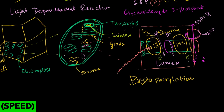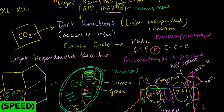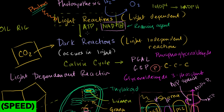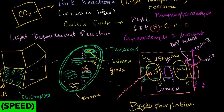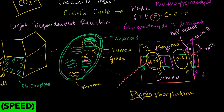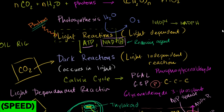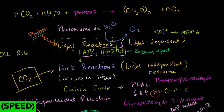The hydrogen protons want to go back — chemiosmosis — they go back into the stroma, and that drives ATP synthase. The light reactions produce ATP and also NADPH. In non-cyclic light reactions, the final electron acceptor is NADP+, and once it accepts the electrons and a hydrogen proton, it becomes NADPH. Water gets oxidized to molecular oxygen as part of this process.